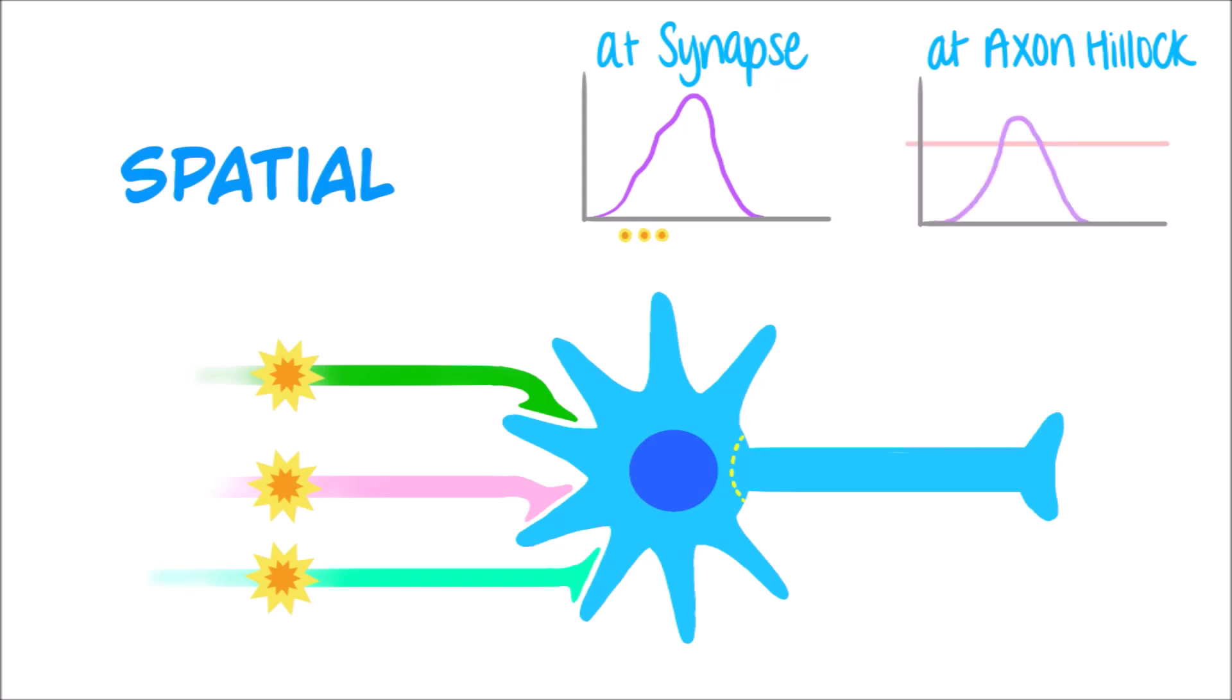The resulting EPSPs will summate into a large compound EPSP at the axon hillock. In this case, the resulting voltage is enough to reach threshold potential and trigger an action potential.